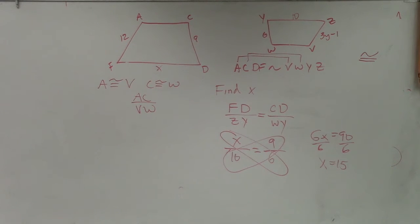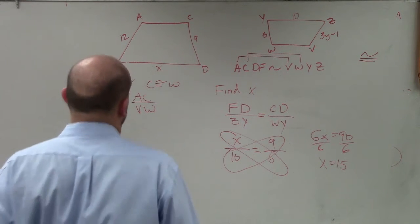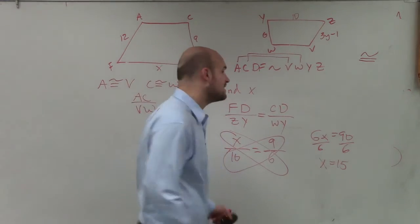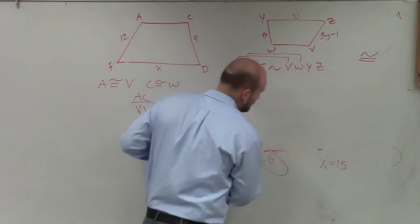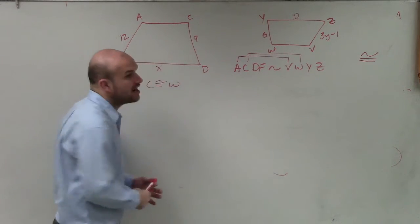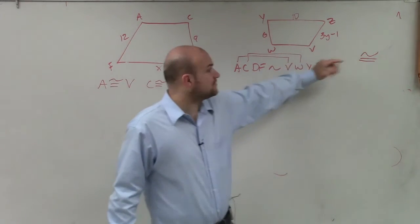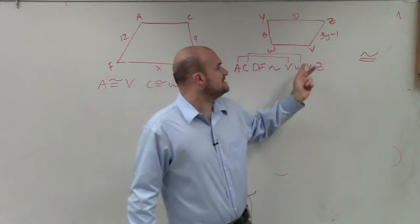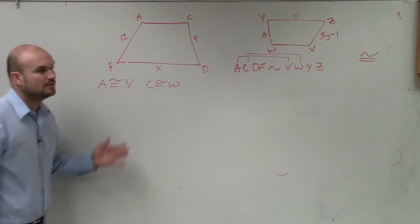For this one, so in this case, now I want to be able to determine what y is. So what I need to do is, when applying similarity, the first thing I want to make sure I can do is say, what is 3y minus 1? What is my side ZV going to be proportional to?